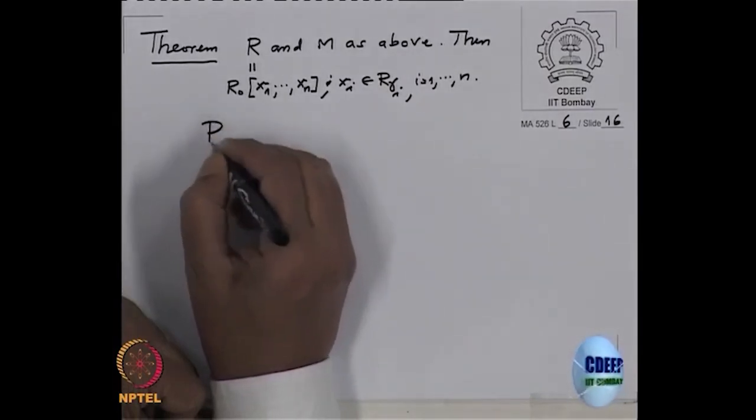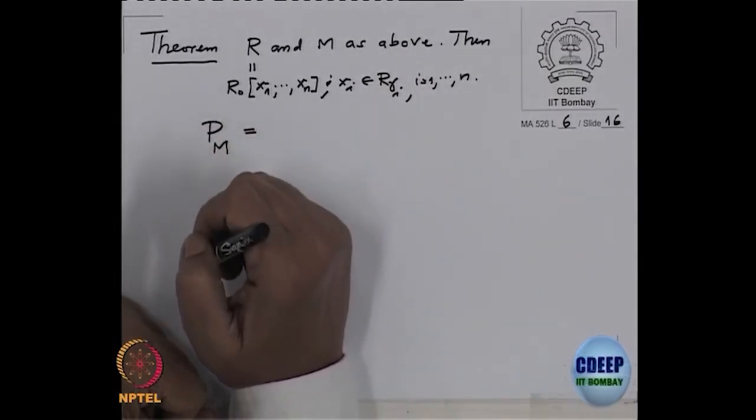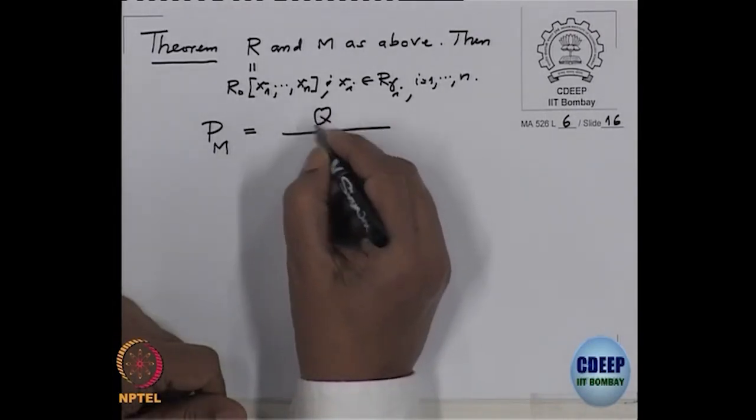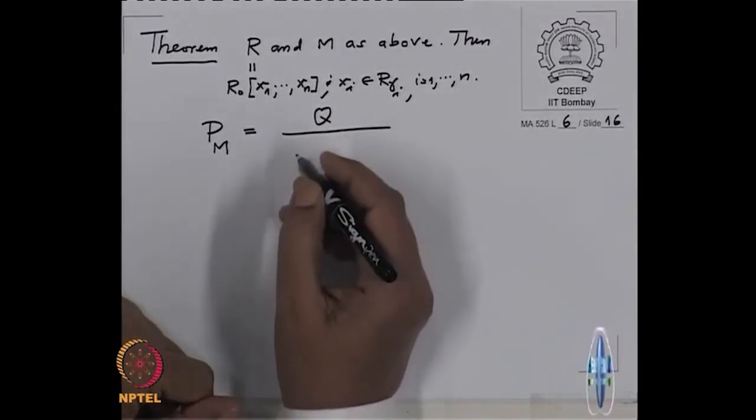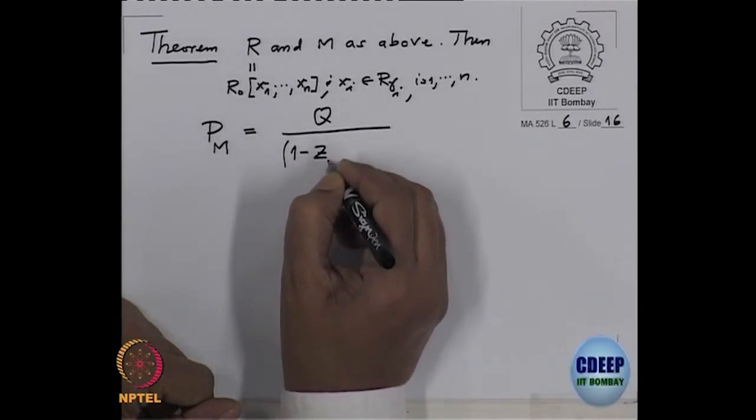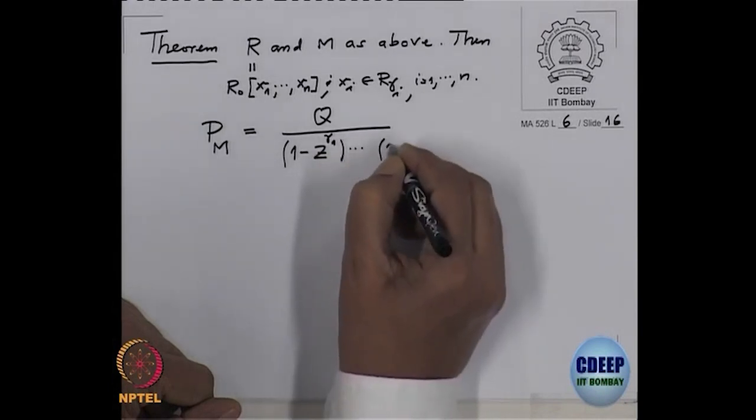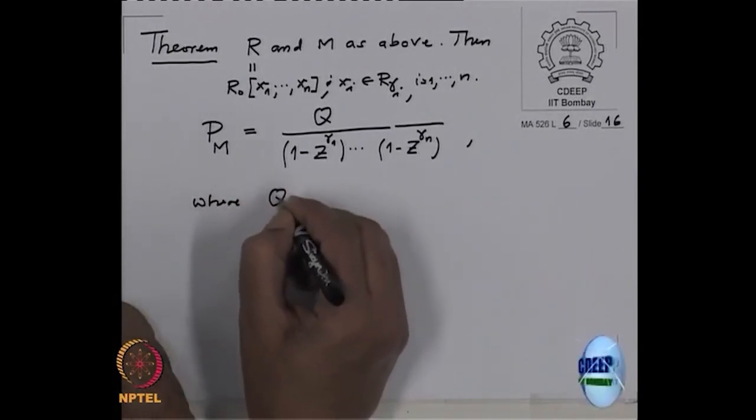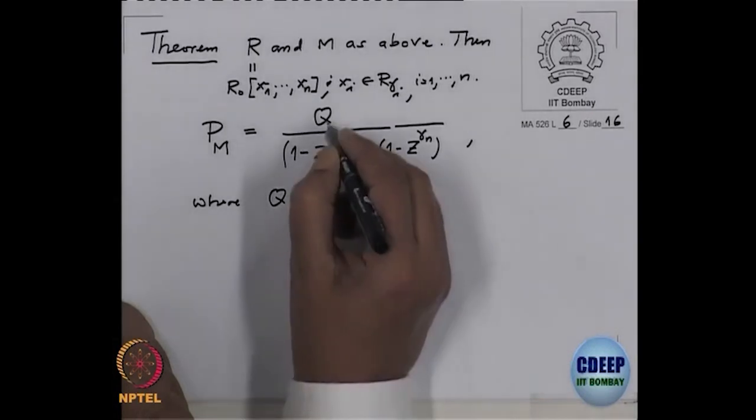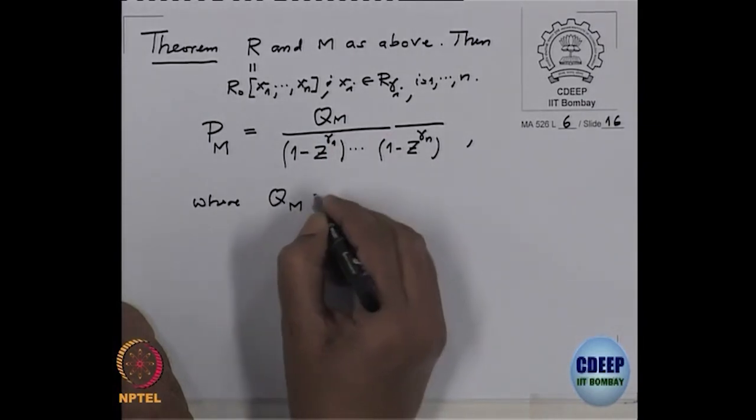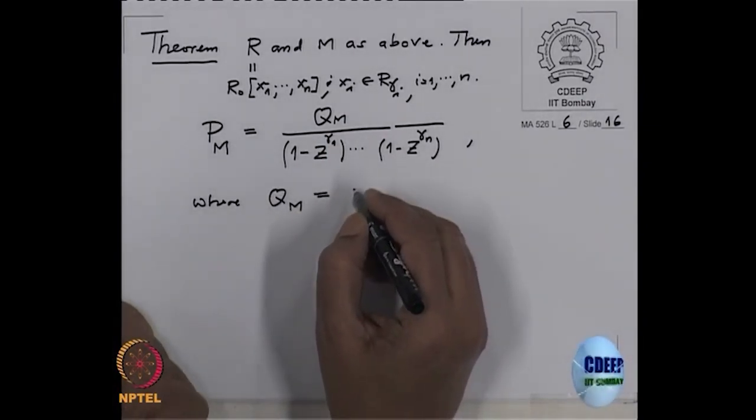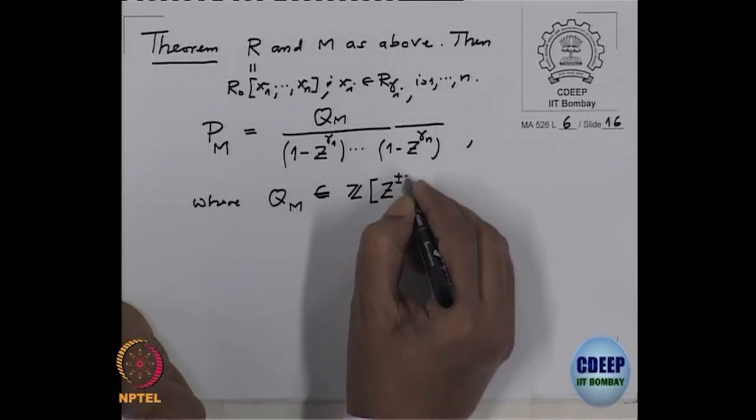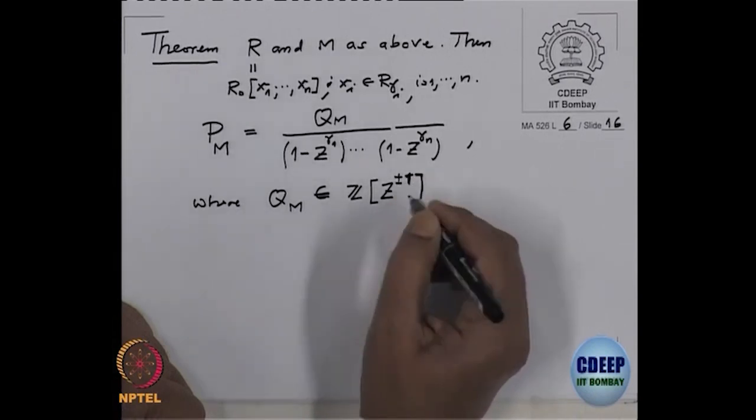Okay, then the Poincaré series of M, P_M, is same as some Laurent polynomial Q divided by, it's a rational function of the type, the numerator is not just a polynomial, it's a Laurent polynomial Q, and then denominator is (1 - Z^{gamma_1}) times (1 - Z^{gamma_n}), where Q is a Laurent polynomial. Q also depends on M actually, so I should really write here M. Q_M is, Q_M belongs to integer coefficients Laurent polynomial, so Z^{plus or minus 1}.